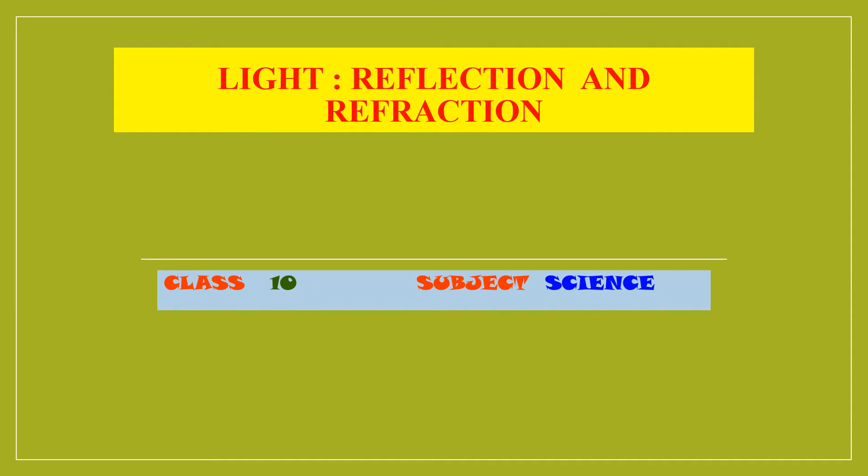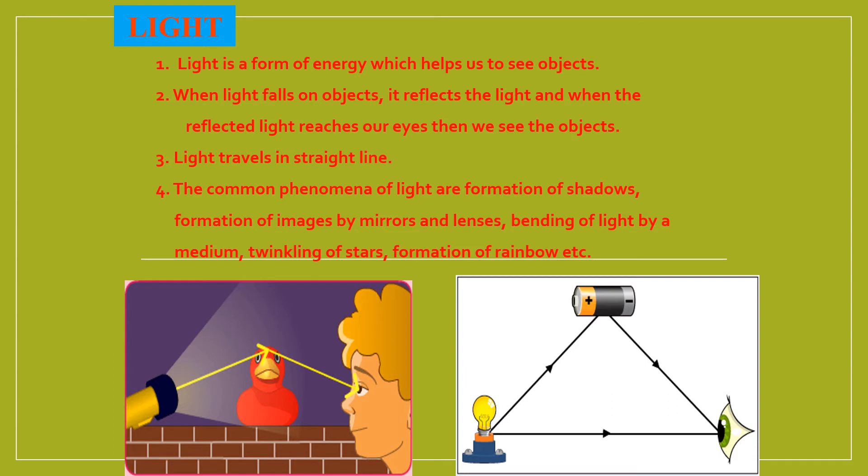In today's lesson, first we will do a revision of some concepts which you have studied in your lower class. Light is a form of energy which helps us to see objects. When light falls on objects, it reflects the light, and when the reflected light reaches our eyes, we are able to see the objects. Light travels in a straight line.